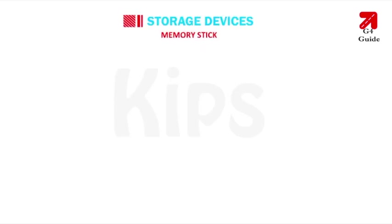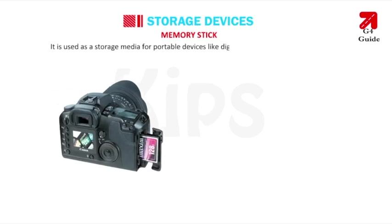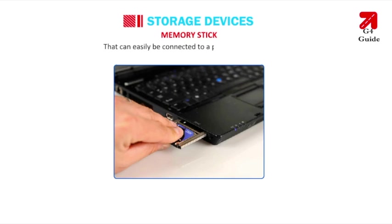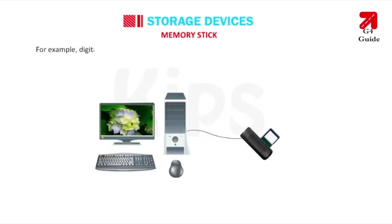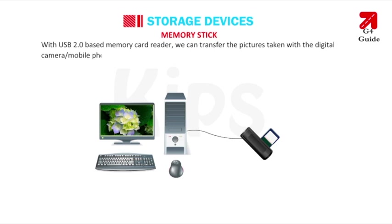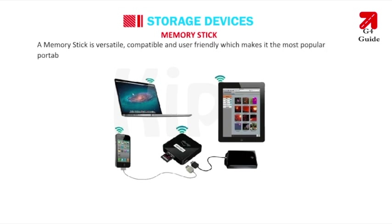A memory stick is a removable flash memory card format used as storage media for portable devices like digital cameras and mobile phones. It can easily be connected to a personal computer. With a USB 2.0-based memory card reader, we can transfer pictures taken with a digital camera or mobile phone to a computer.